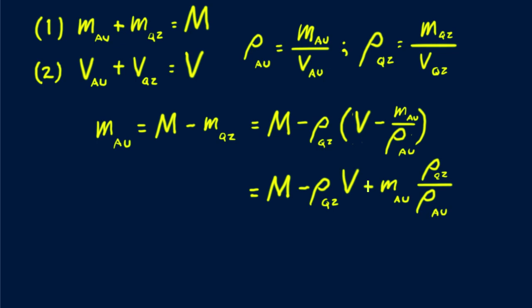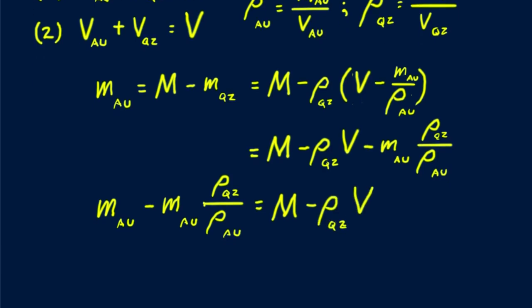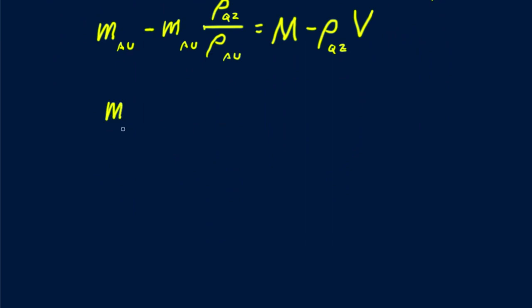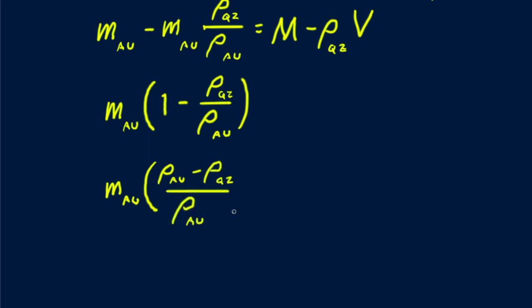Now rearrange this so all the symbols for gold's mass are on the left side. We're getting there. The left side of this equation can be expressed as... And with a bit of algebra, then continuing.